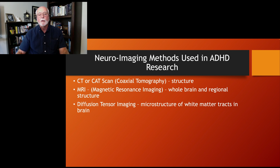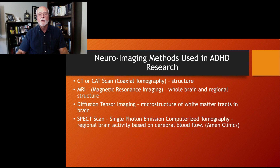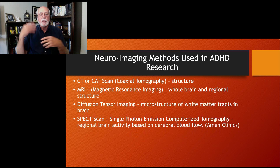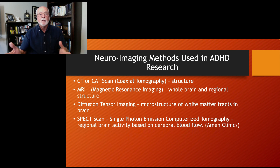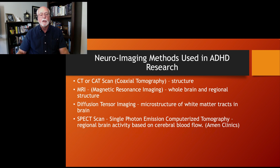So notice that those three methods are looking at structure. Then we have measures of function. One of the first to be developed was the SPECT scan — single photon emission computerized tomography — where you expose the individual to a very small amount of radioactive substance. That gets into the blood and into the brain, and the scanner detects where this blood is going, giving us a picture of how active certain brain structures are in certain tasks or resting states. We can compare activity between ADHD groups and typical groups.